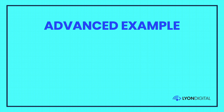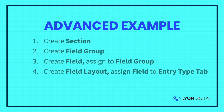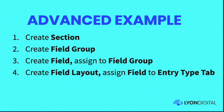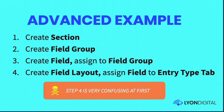Let's look at a more advanced example — a very common use case. You want to add a new section and apply a new field. The order is: first, use a migration to create a new section; second, create a migration for a field group; third, create the field and assign it to that field group; fourth — and this is the tricky part — create a field layout and assign the field to an entry type, specifically to a tab within that entry type. In Craft's drag-and-drop UI you can have multiple tabs and multiple entry types, so step four can be a bit confusing at first.